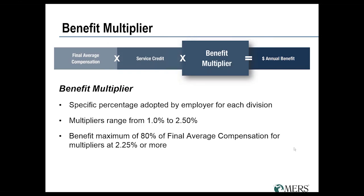The final component of the benefit formula is your benefit multiplier, a percentage adopted by your employer for each division under the plan. Standard multipliers in our system range from 1% up to a high of 2.5%. Keep in mind, if you have a multiplier above 2%, you may trigger a maximum benefit of 80% of your final average compensation. For instance, with a 2.5% multiplier, after 32 years of service credit you would reach that benefit maximum, and your benefit would simply be calculated as 80% of your final average compensation.